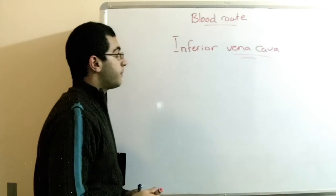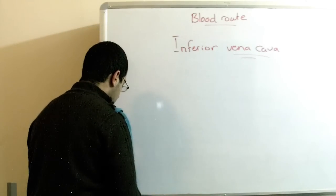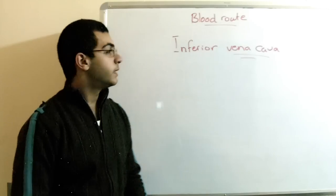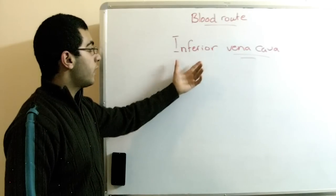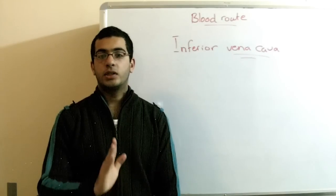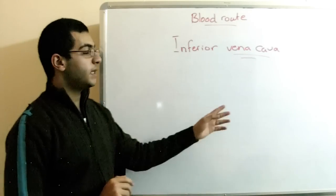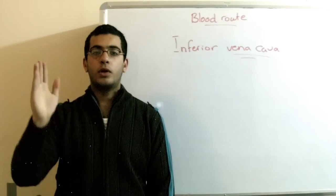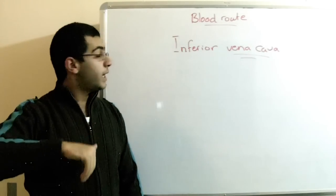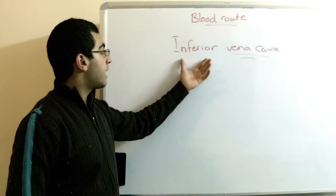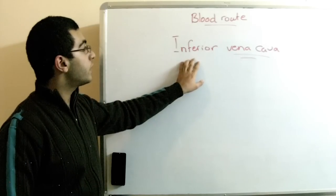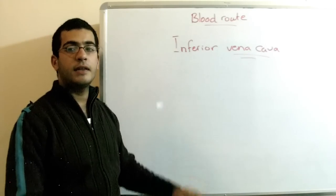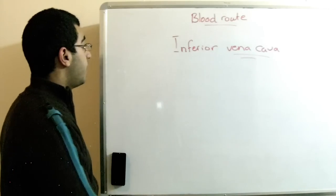The vena cava is a very important vein in the heart. The inferior means that it's downwards. This vena cava has two branches, one downwards and one upwards. The one downwards is the inferior vena cava, and this is where the blood route reaches. Then the food drops inside the heart.